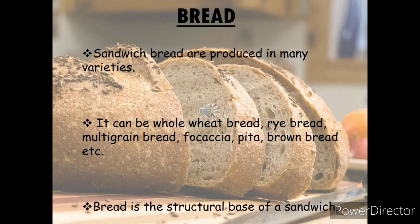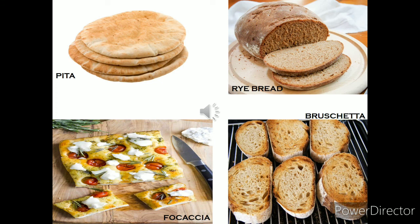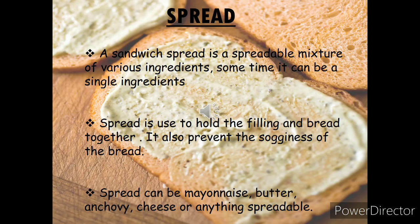Bread is actually the structural base of a sandwich — the spread, garnish, and filling are all placed on top of the bread. On the picture you can see some of the common breads used for making different types of sandwiches: pita bread, which is unleavened; rye bread; focaccia — the plain version is preferred for sandwiches; and bruschetta. Now, the main function of the spread is to hold the filling and the bread together. It also forms a protective layer on the bread and prevents it from getting soggy from the moisture in the filling. Moreover, it adds to the taste and increases the nutritive value of the sandwich.